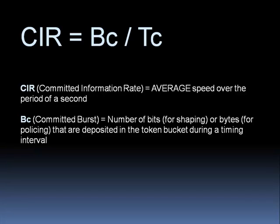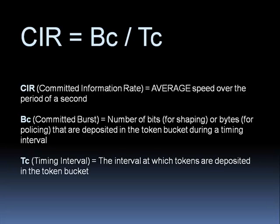That's where our other variables come in. The Bc—the committed burst—is the number of tokens we're going to be depositing in the token bucket every timing interval. The units of measure differ: with shaping, the Bc unit is bits, and for policing it's bytes. But the concept is the same. We're going to dump in a certain number of bits or bytes into the token bucket every timing interval. Once those tokens have been exhausted, we're not able to send anymore until we get more tokens. When's that going to be? Every timing interval—that's the Tc. This is how everything interrelates.